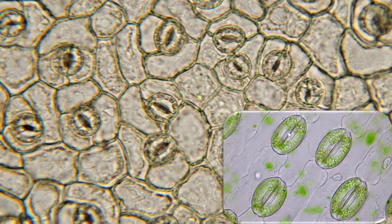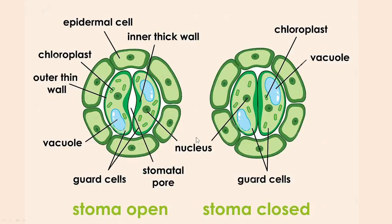Looking at the structure of stomata, each stoma is surrounded by two special epidermal cells called guard cells. Guard cells are specialized epidermal cells, whereas the other cells surrounding the guard cells are normal epidermal cells. There are two states: one in which the stoma is open, and one in which the stoma is closed.